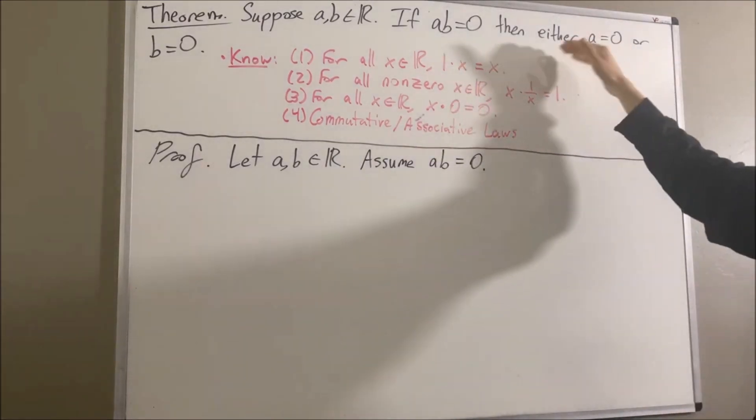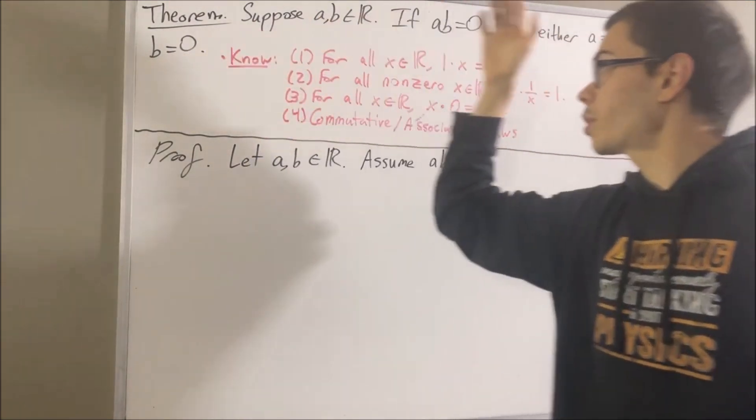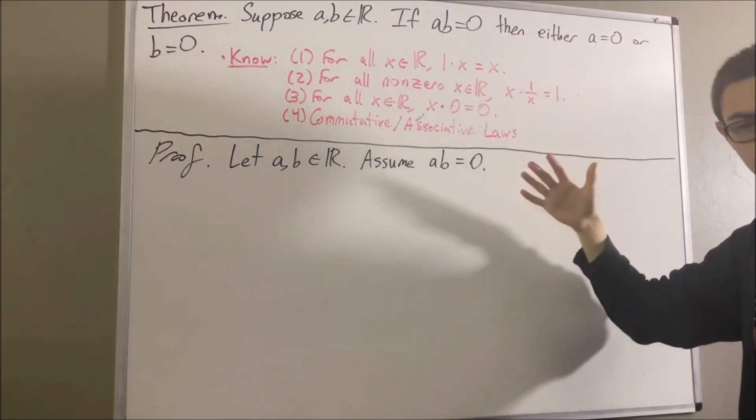So we want to show that either A is equal to 0 or B is equal to 0. And the way we're going to prove this is we're going to split this up into two cases, right?